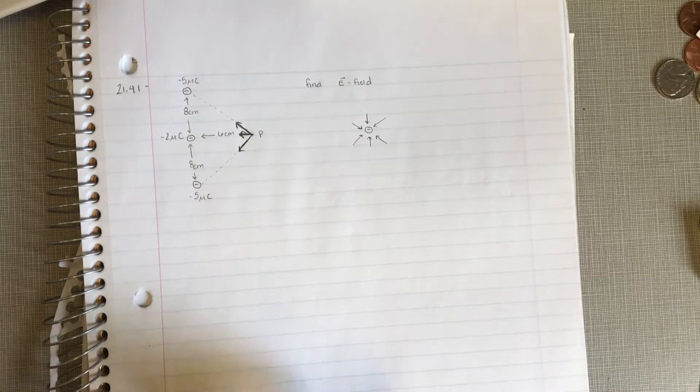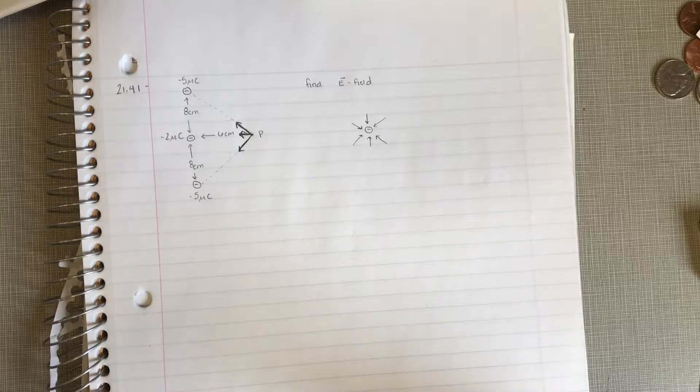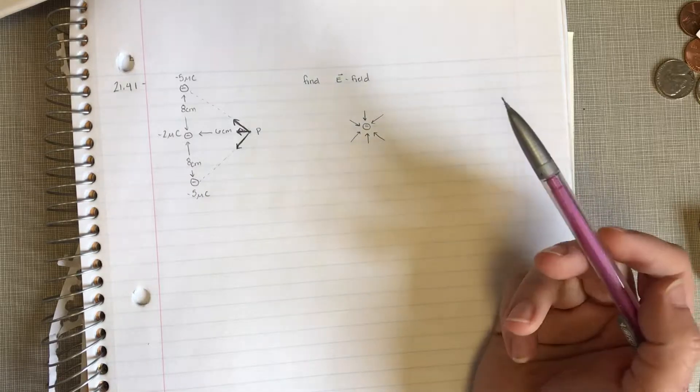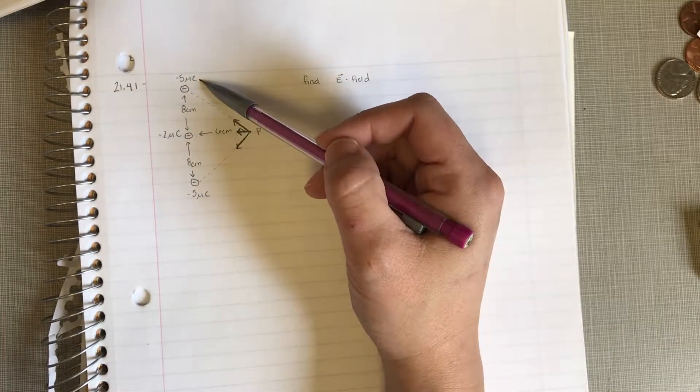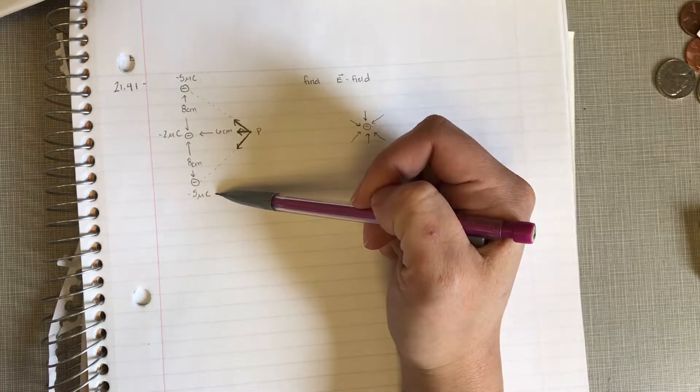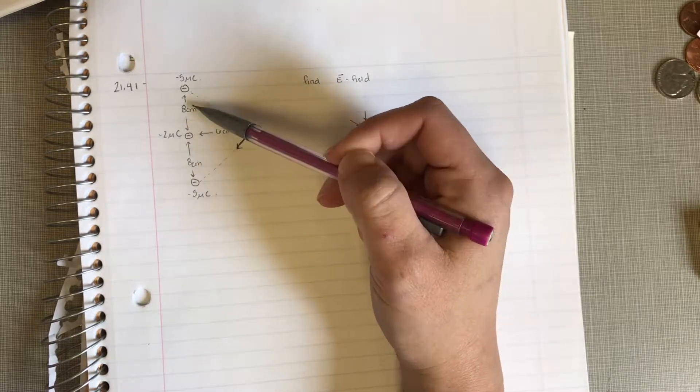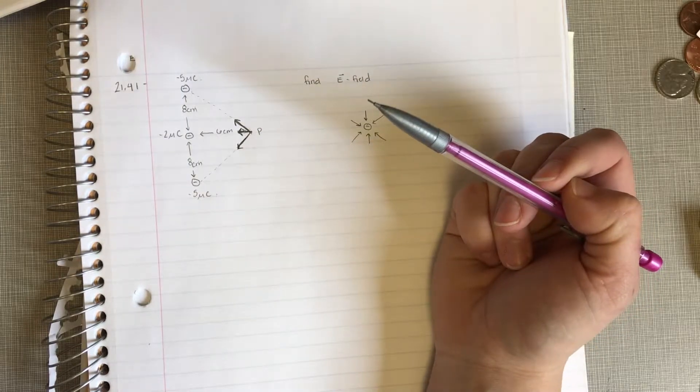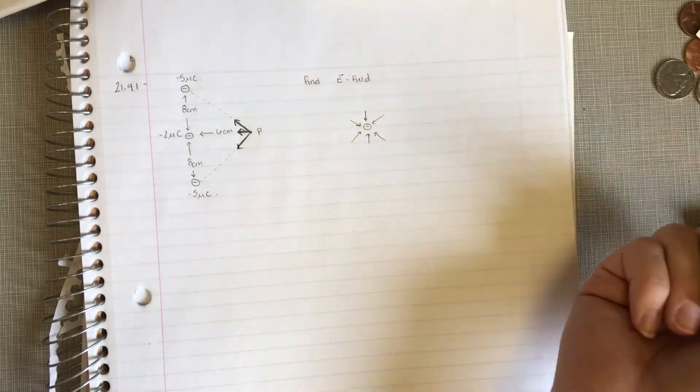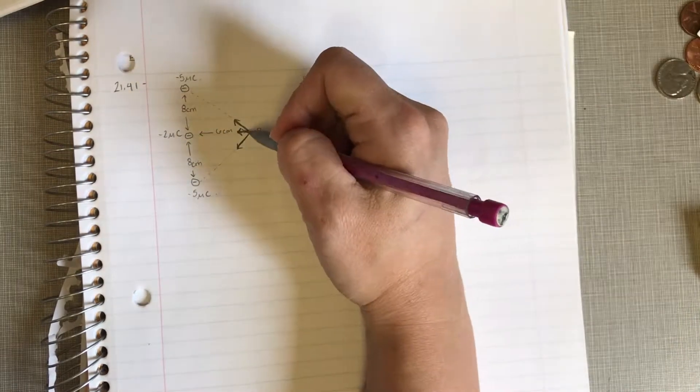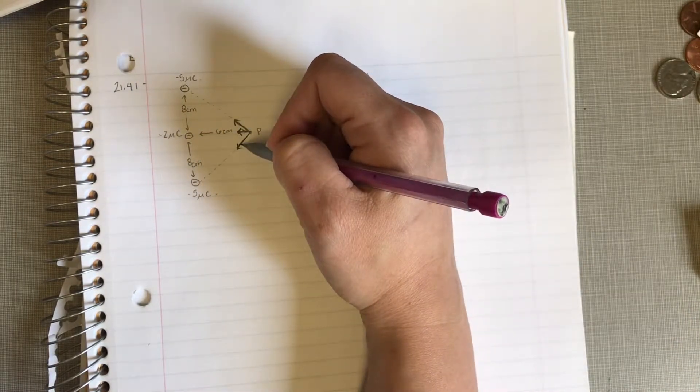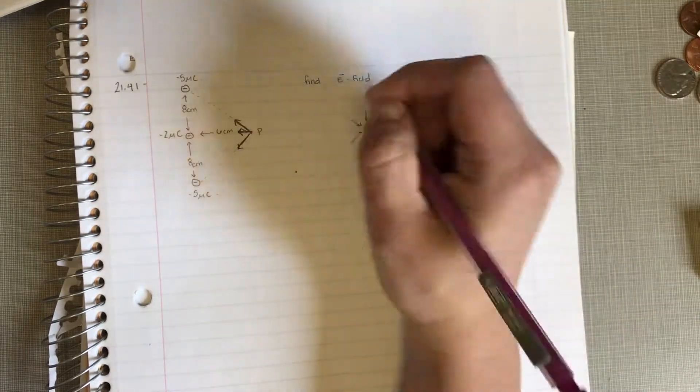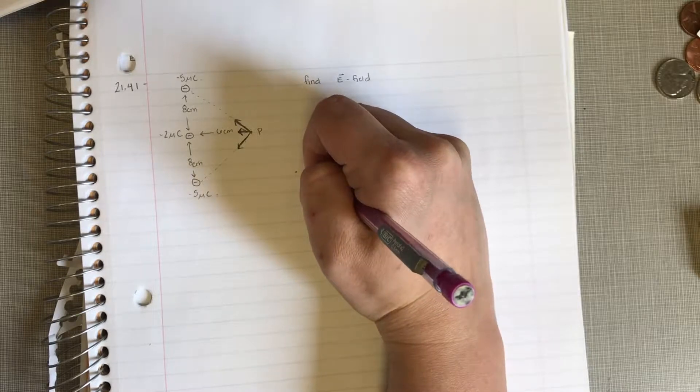So just by looking at this, you always want to take into account different symmetry arguments that are going to make your life a lot easier so you don't have to do as much work. So here we have a negative five microcoulomb charge, a negative five microcoulomb charge. They're the exact same distance away in the vertical and horizontal directions. So by symmetry and by using the same numbers, these two diagonal electric fields are going to have the same magnitude.